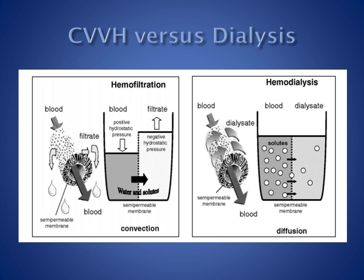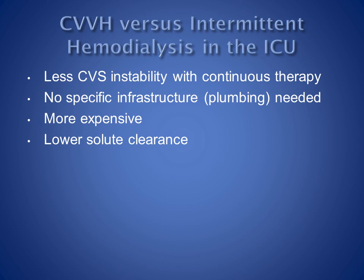Dialysis is an alternative to CVVH, and the differences in the techniques are illustrated here. CVVH is a convective process with loss of water due to ultrafiltration, accompanied by convective loss of solutes. Dialysis involves movement of solutes by diffusion down a concentration gradient across a semi-permeable membrane. Most ICUs do not have the plumbing to allow use of intermittent hemodialysis. Although outcomes are no different between the techniques, continuous therapies are associated with less hemodynamic instability, as fluid and solute shifts occur more gradually. If the costs of infrastructure are removed, intermittent hemodialysis is less expensive than CVVH, as the costs of replacement fluid in CVVH are considerable.